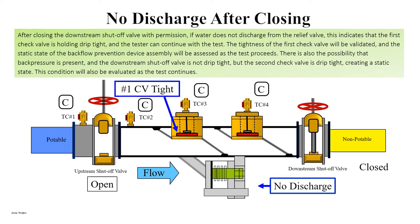No discharge after closing. After closing the downstream shutoff valve with permission, if water does not discharge from the relief valve, this indicates that the first check valve is holding drip tight and the tester can continue with the test. The tightness of the first check valve will be validated and the static state will be assessed as the test proceeds. There is also the possibility that back pressure is present and the downstream shutoff valve is not drip tight, but the second check valve is drip tight, creating a static state. This condition will also be evaluated as the test continues.